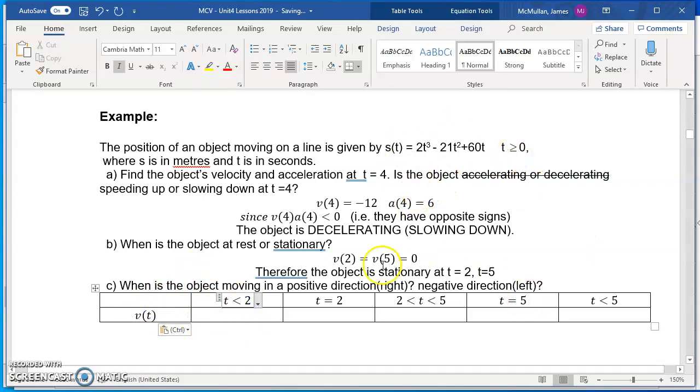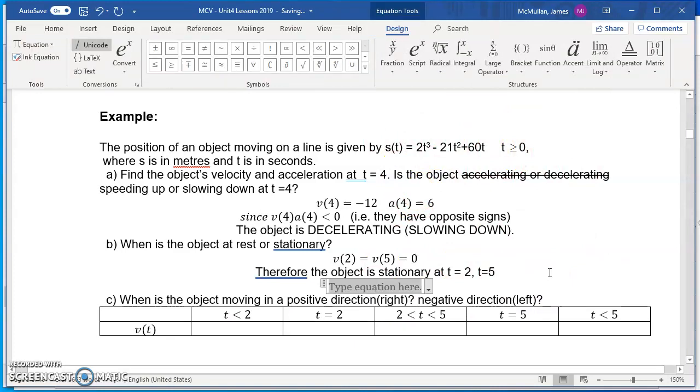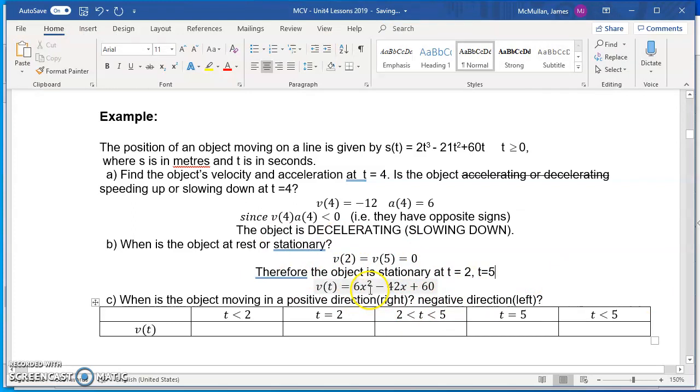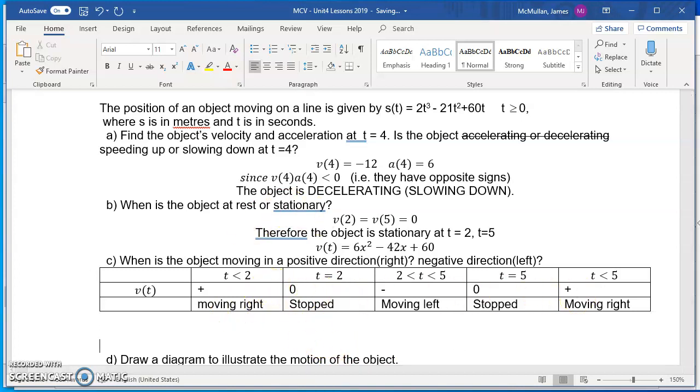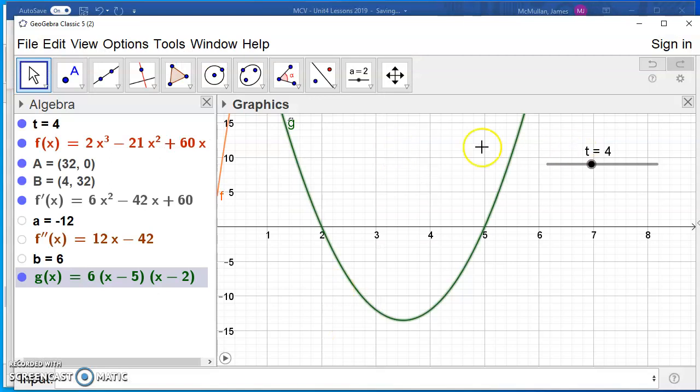Again, if you're not sure, you divide this all by 6, and then you'll see it. You can factor it, because it's a 10 and a 7. It's a positive 10 product, but a negative 7 sum, so negative 5, negative 2 should do it. So 5 and 2 are going to be your two values, and this is when the object is momentarily at rest. So let's write that down. So when is the object at rest? V of 2 equals V of 5 equals 0.